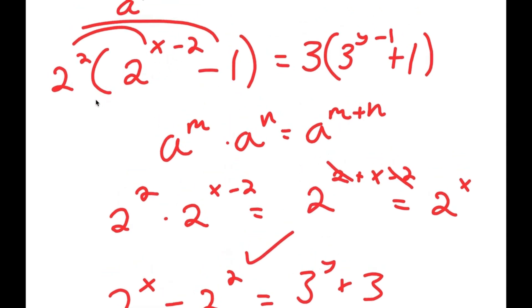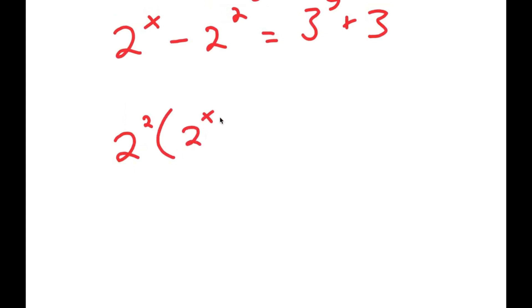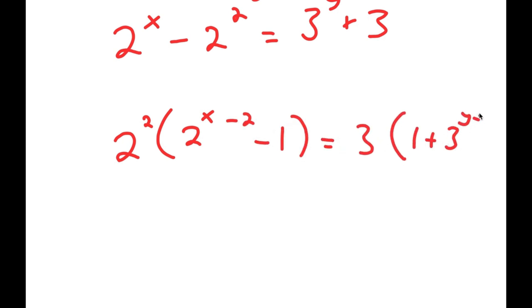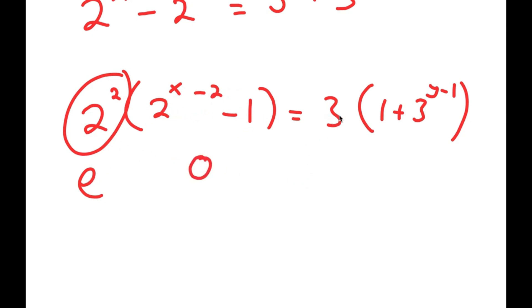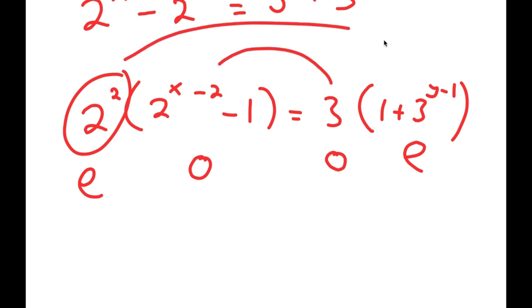Rewriting, I have 2 squared times (2 to the power of x minus 2 minus 1) is equal to 3 times (1 plus 3 to the power of y minus 1). Notice that 2 squared equals 4, which is even, and 2 to the power of x minus 2 is even, so even minus 1 is odd. You have an even number times an odd number on the left. On the right, 3 is odd, 3 to the power of any number is odd, and odd plus 1 is even — so you also have an odd number times an even number.